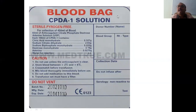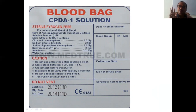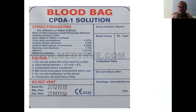See here — the blood bag contains CPDA solution, called CPDA-1. CPDA stands for Citrate Phosphate Dextrose Adenine solution. The citrate here corresponds to sodium citrate, one of the three sodium forms already mentioned. The blood bag consists of this CPDA solution. The key things to remember are the sodium forms — sodium citrate, sodium oxalate, sodium edetate — and heparin.